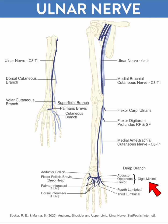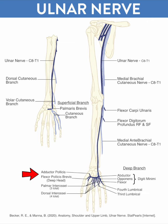it provides innervation to the hypothenar muscles, then the seven interossei — four dorsal and three palmar — two lumbricals to the small and ring finger, and then the adductor pollicis and the flexor pollicis brevis deep head. The adductor pollicis is a very strong adductor of the thumb and gives us a lot of function, so loss of that has significant implications.